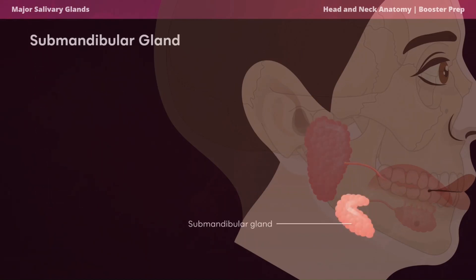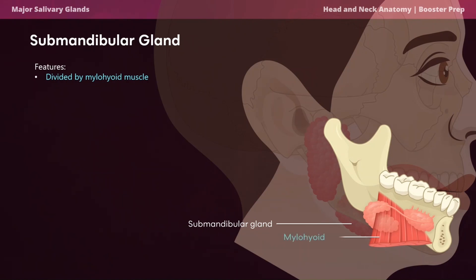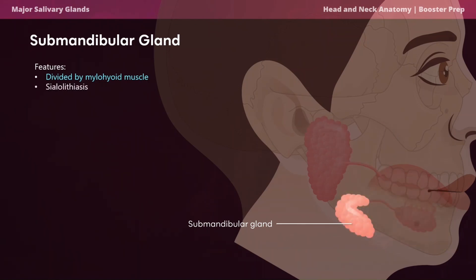The submandibular gland is the second largest, located in the submandibular fossa on the medial aspect of the mandible. It contains a superficial and deep lobe divided by the mylohyoid muscle — a high-yield topic. This gland is most likely to experience sialolithiasis, or salivary gland stones, due to its saliva composition with higher concentrations of mucin and calcium ions than other salivary glands.